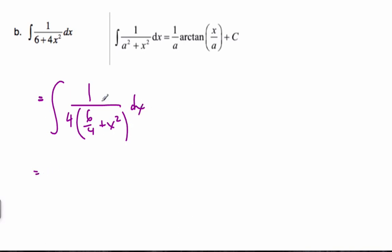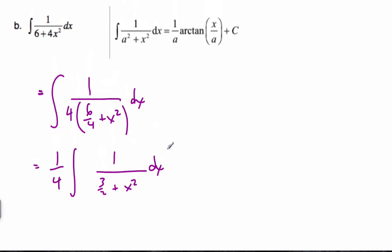which in essence makes this 6 over 4 plus x squared dx. Which, I can pull the 1 quarter all the way out. That's 1 over, well, this is 3 halves plus x squared dx. And so now, using my formula, I can see that it's going to be 1 quarter times 1 over a. Well, a is going to be the square root of 3 over the square root of 2, because this is a squared. Arctan,